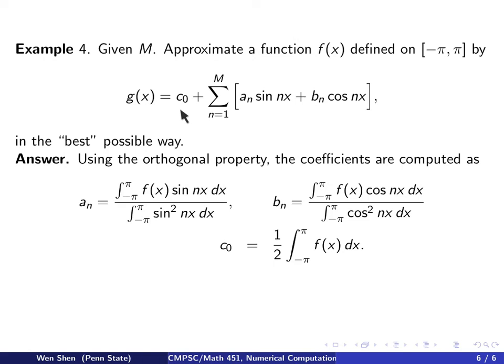And the constant term, you can think it's c0 times 1, where 1 is your basis function. So the numerator becomes integral of f times 1, and the denominator will be integrating 1 from negative pi to pi, which would actually give me 2 pi. So I lost the pi here. So this is not 2. This is actually 2 pi.